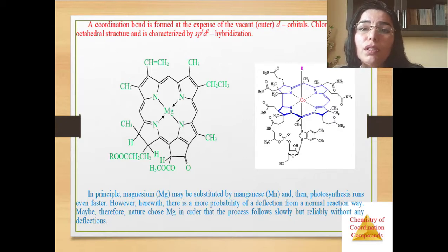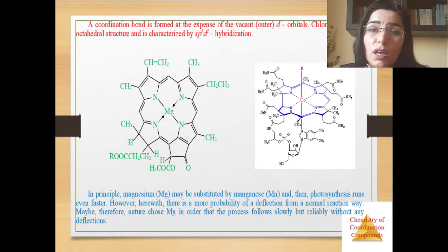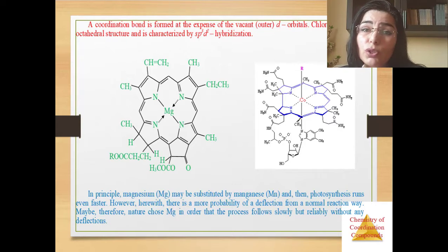In principle, magnesium may be substituted by manganese and then photosynthesis runs even faster. However, there is more probability of deflection from a normal reaction pathway. Maybe therefore nature chooses magnesium in order that the process follows slowly but reliably without any deflections.